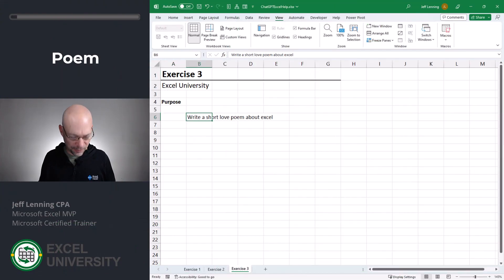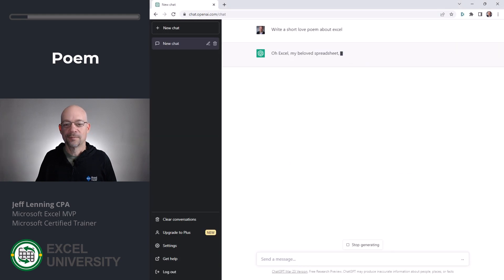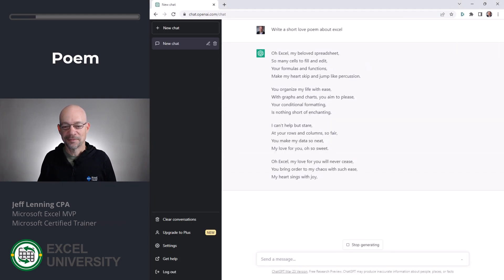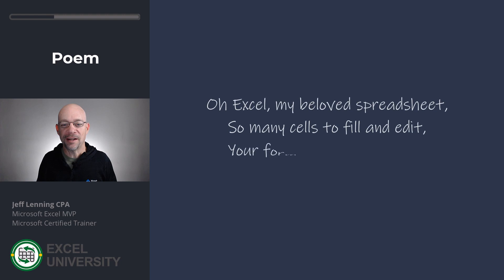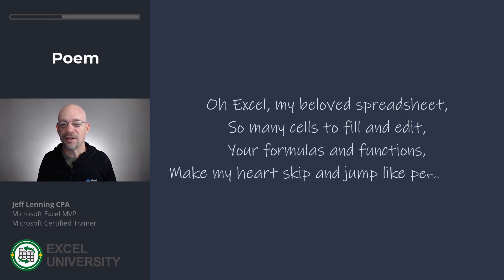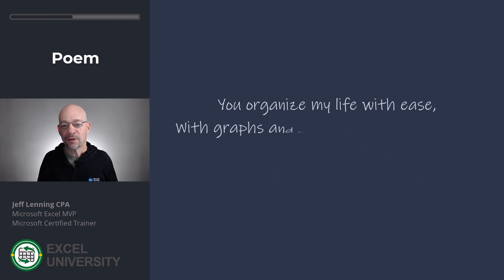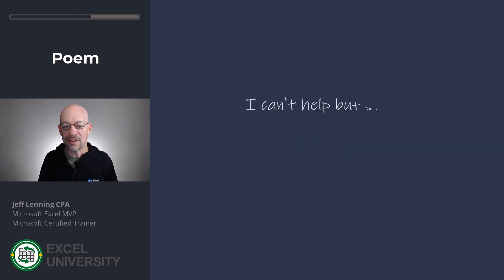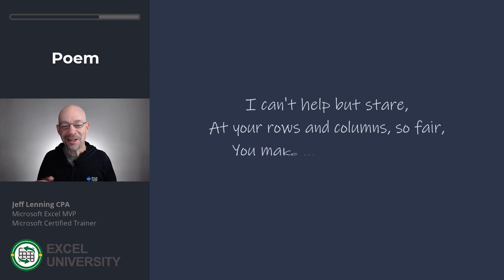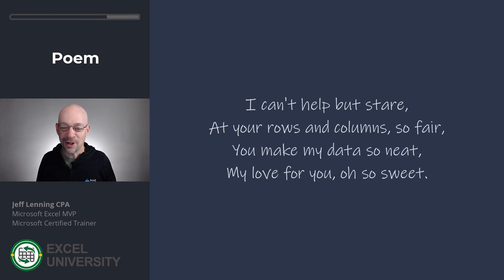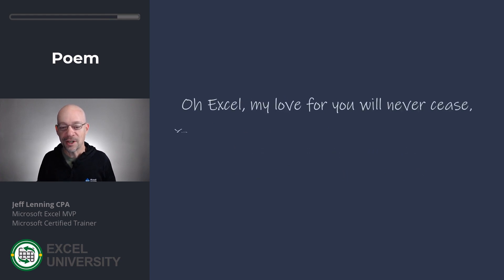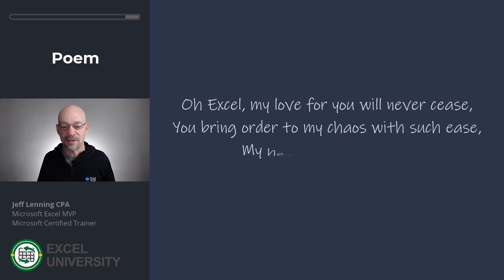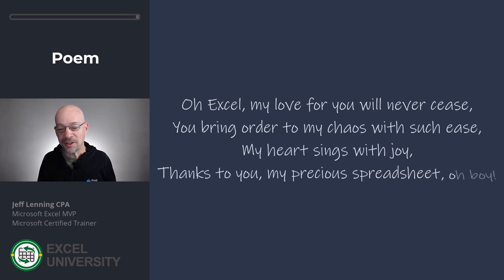Let's go to the next exercise, exercise three. This one is just for fun — I want to have ChatGPT write a short love poem about Excel. I'll send you out by reading this poem. 'Oh Excel, my beloved spreadsheet. So many cells to fill and edit. Your formulas and functions make my heart skip and jump like percussion. You organize my life with ease, with graphs and charts you aim to please. Your conditional formatting is nothing short of enchanting. I can't help but stare at your rows and columns so fair. You make my data so neat, my love for you, oh so sweet. Oh Excel, my love for you will never cease. You bring order to my chaos with such ease. My heart sings with joy — thanks to you, my precious spreadsheet, oh boy.'